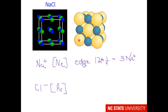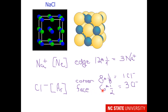Moving to chloride: the yellow sphere occupies a corner site — 8 corner atoms, each one-eighth inside the unit cell, giving 1 chloride. There are also face sites: 6 face sites in a unit cell, each one-half inside the unit cell volume, giving 3 chlorides. So looking at our ratio, we get sodium 3, chloride 4. Does that make sense given the charges? Shouldn't the ratio be 1 to 1 stoichiometry? I think we've missed something.